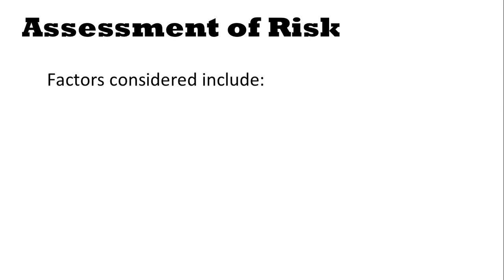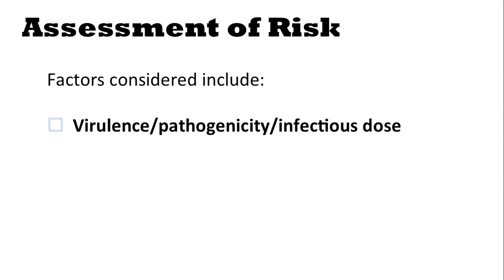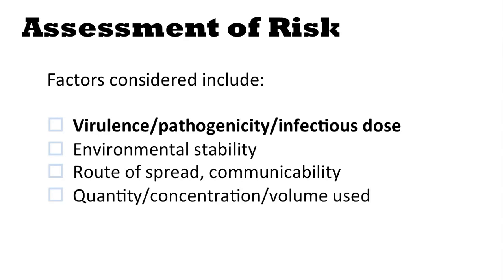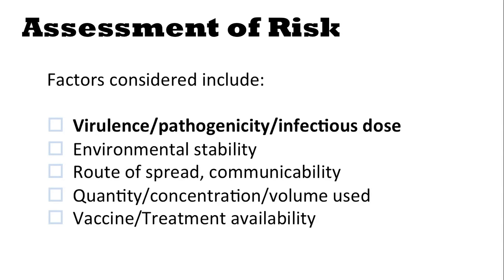To assess the risk of a particular agent, one must consider the following factors: the virulence, pathogenicity, or infectious dose of the agent; the environmental stability of the agent; its route of spread, or communicability; the quantity, concentration, or volume to be used in the experiments; the availability of a vaccine or treatment for the agent; and the allergenicity of the agent.